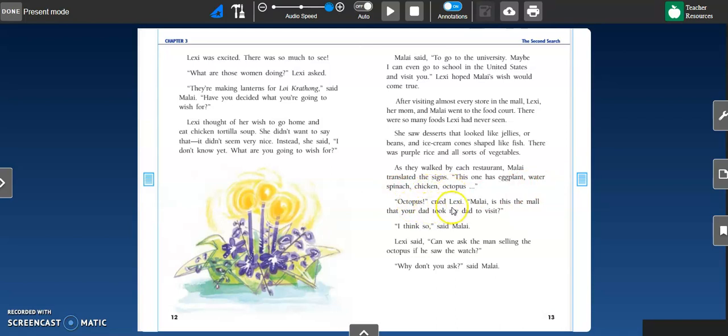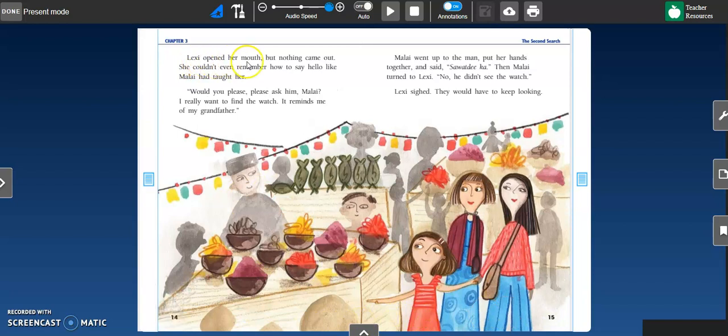Octopus, cried Lexi. Malay, is that the mall that your dad took my dad to visit? I think so, said Malay. Lexi said, can we go ask the man selling the octopus if he saw the watch? Why don't you ask, said Malay. Lexi opened her mouth, but nothing came out. She couldn't even remember how to say hello like Malay had taught her. Would you please, please ask him, Malay. I really want to find the watch. It reminds me of my grandfather.